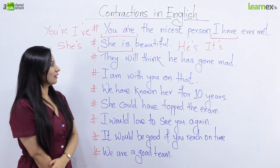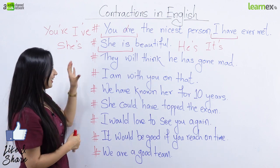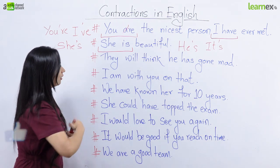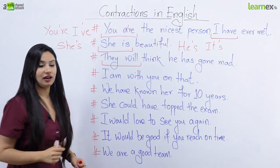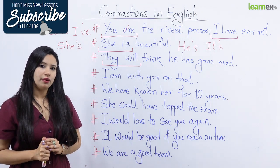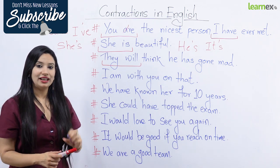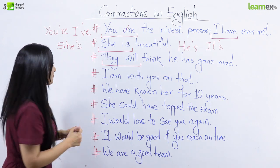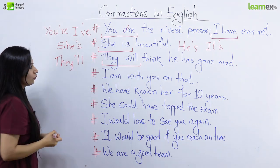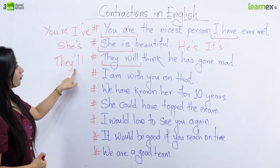Ab iske saath apne next sentence pe badhte hain: 'They will think he has gone mad.' Woh sochenge ki woh paagal ho gaya hai. Is sentence mein bhi hum ek bahut interesting contraction bana sakte hain. Yahan par hum 'they' aur 'will' ko join karke banayenge they'll. Aapko English word 'ill' ka matlab toh pata hoga — jab koi vyakti bimaar hota hai aap kehte hain 'he is ill.' Bas wahi sound leni hai — they aur ill ko jod kar banana hai: they'll. Kyunki humne yahan par W ko use nahi kiya, isliye W ki jagah humne apostrophe lagai aur banaya they'll.